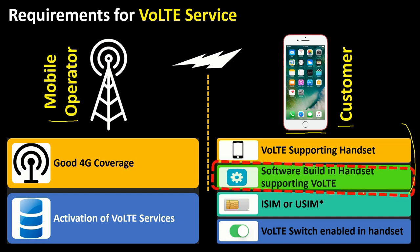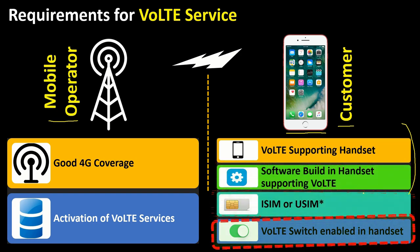The third requirement is the iSIM or uSIM used by the user — VoLTE will not work on a traditional SIM from the 2G or 3G era. The last but most critical requirement is the VoLTE switch in the handset, where the user can enable or disable VoLTE service themselves.